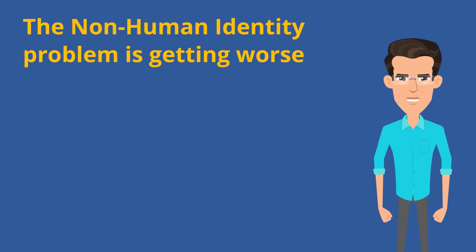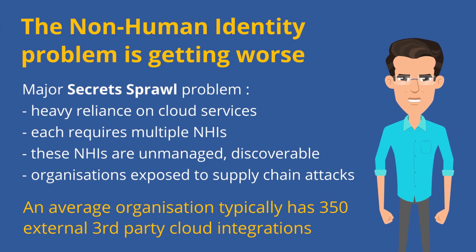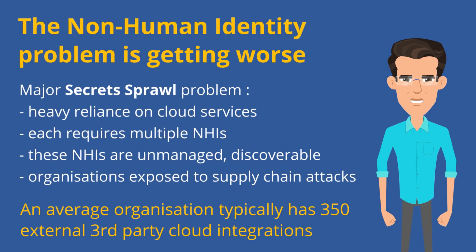The non-human identity problem is getting worse. We now have a major secret sprawl problem. Organizations now rely heavily on cloud services. Each cloud integration requires multiple non-human identities. These non-human identities are typically unmanaged and discoverable, exposing organizations to supply chain attacks.